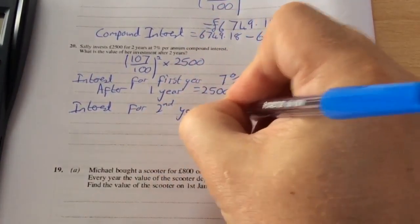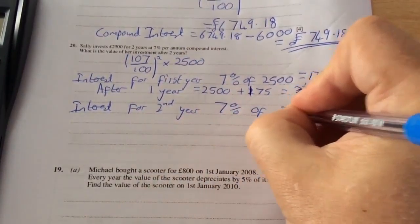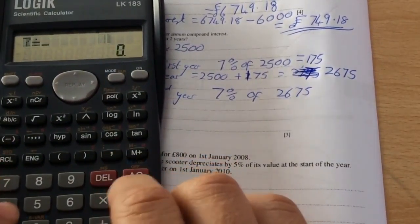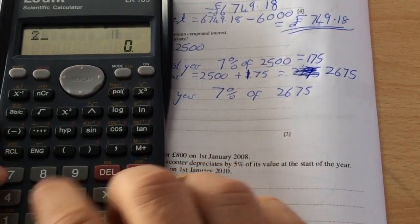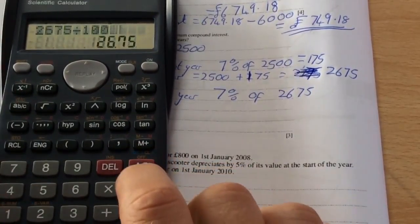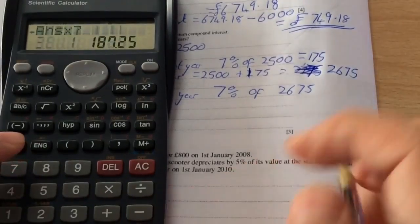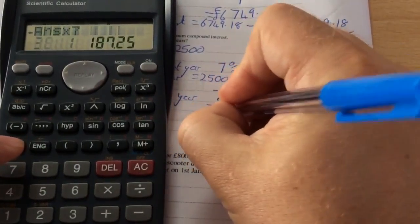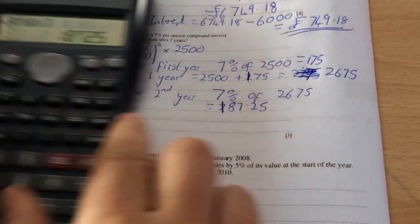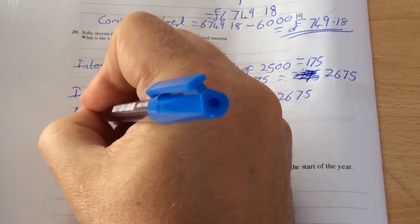To work out the interest for second year, it's 7% of £2,675. So to work out 7% of £2,675, I'm going to do 2,675 divided by 100 times seven, which is £187.25.